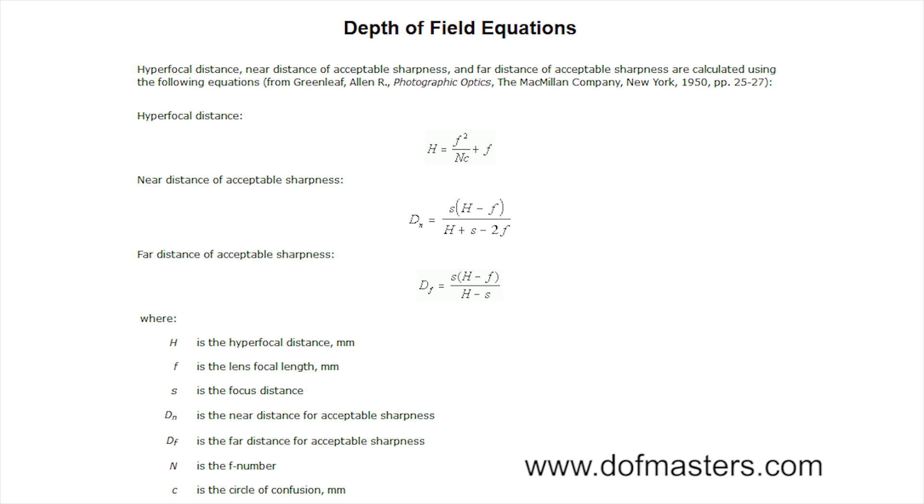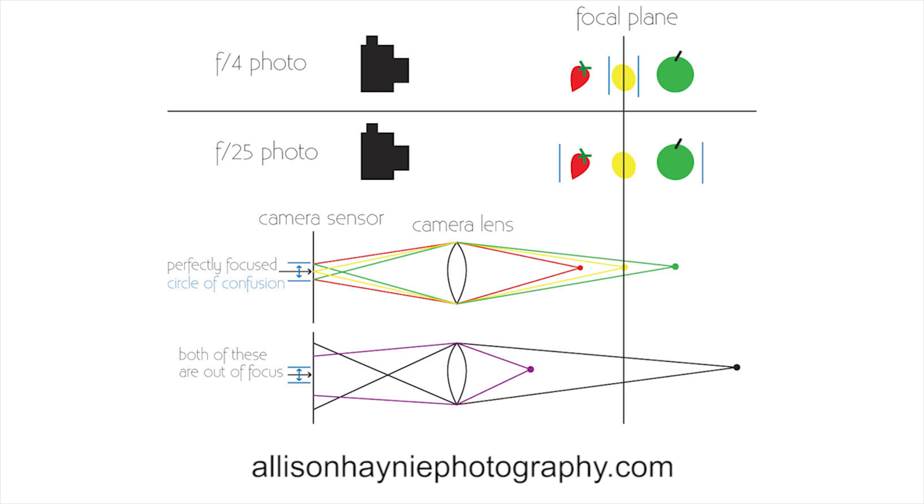C is a circle of confusion in millimeters. Now the circle of confusion is an optical spot caused by a cone of light rays from a lens not coming to a perfect focus when imaging a point source.